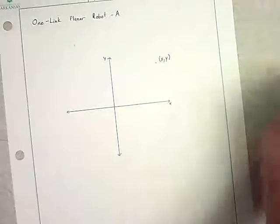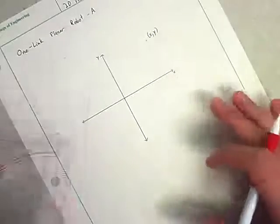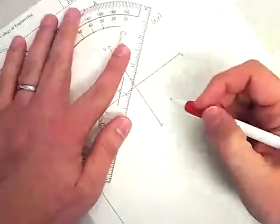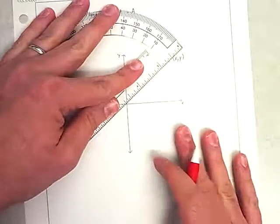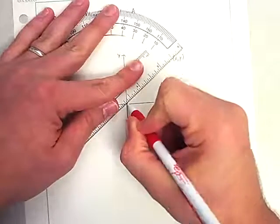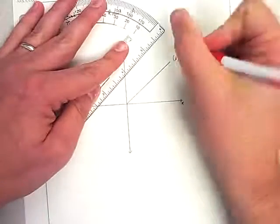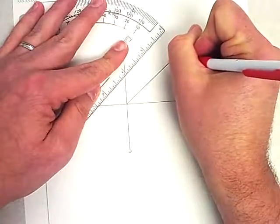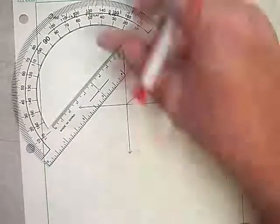And so the way we would represent that in engineering is we would draw a vector. And so to draw a vector, you would start at the origin, that's going to be the tail of our vector. We would draw out to that point and draw a head on that.